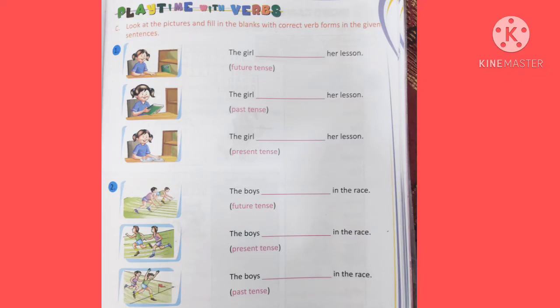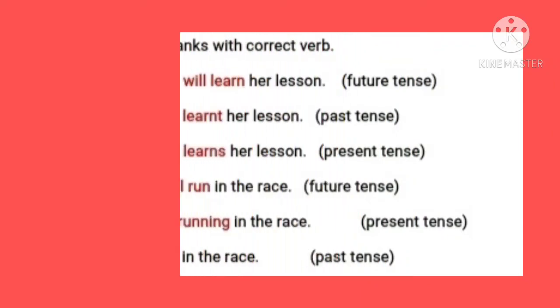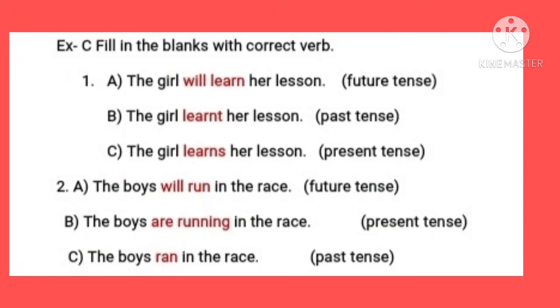Number two, next pictures: 'The boys dash in the race.' Future tense: 'The boys will run in the race.' Present tense: 'The boys are running in the race.' Past tense: 'The boys ran in the race.' Fill the answers carefully in the book, taking care of your writing.